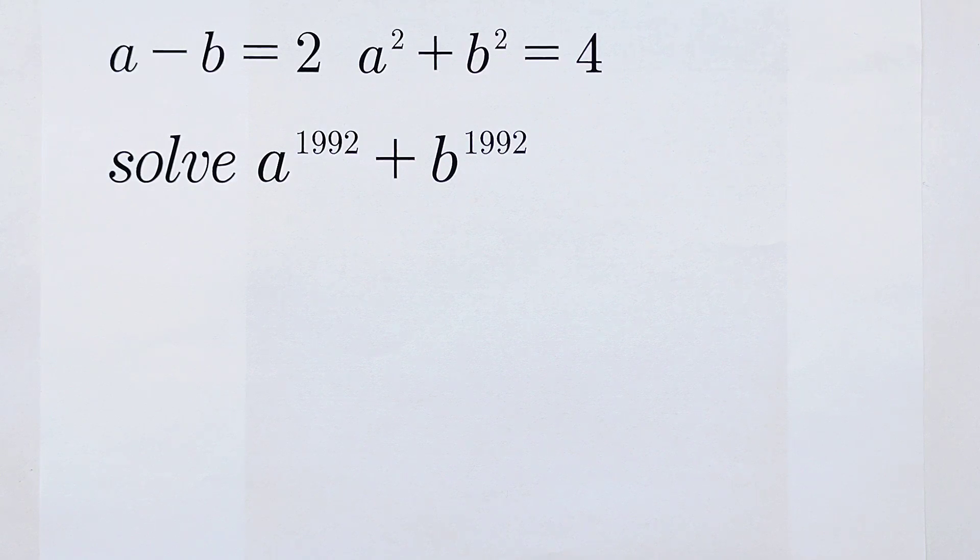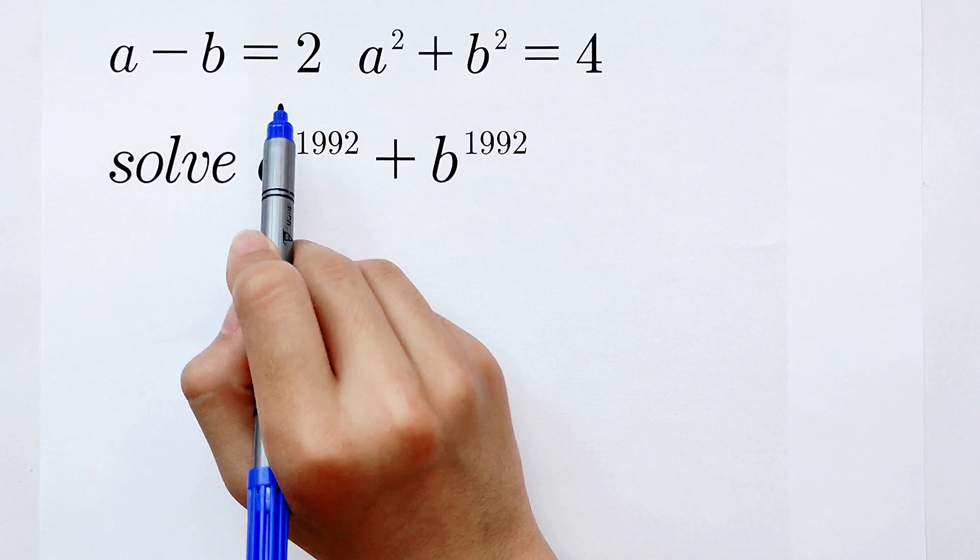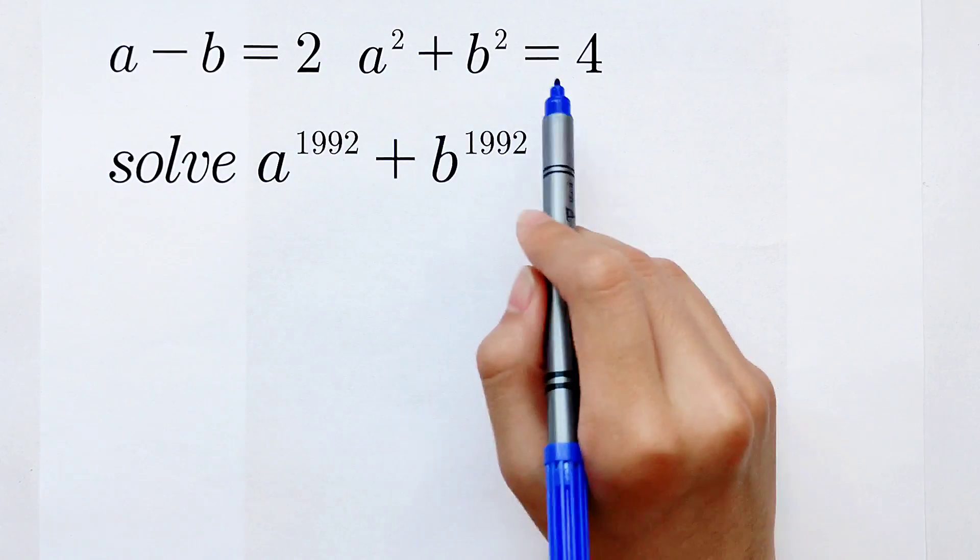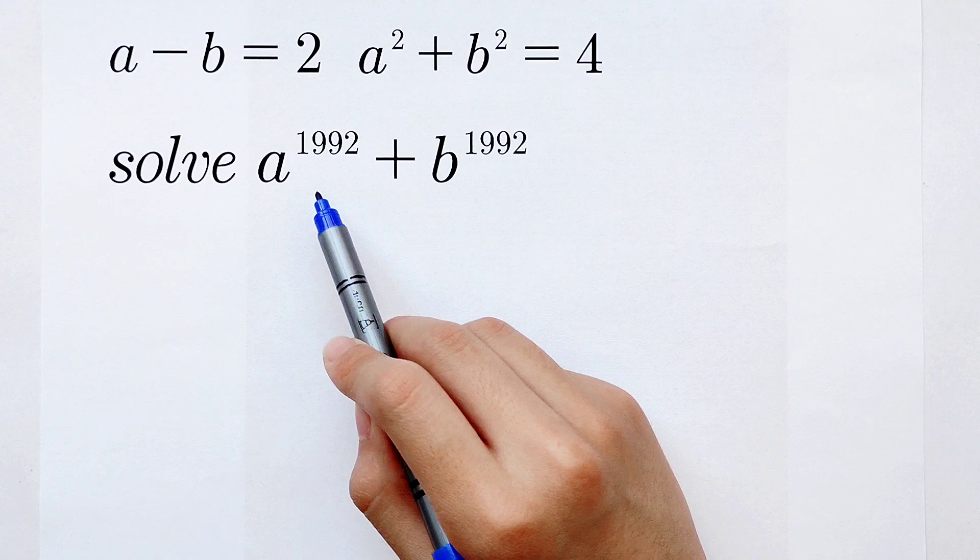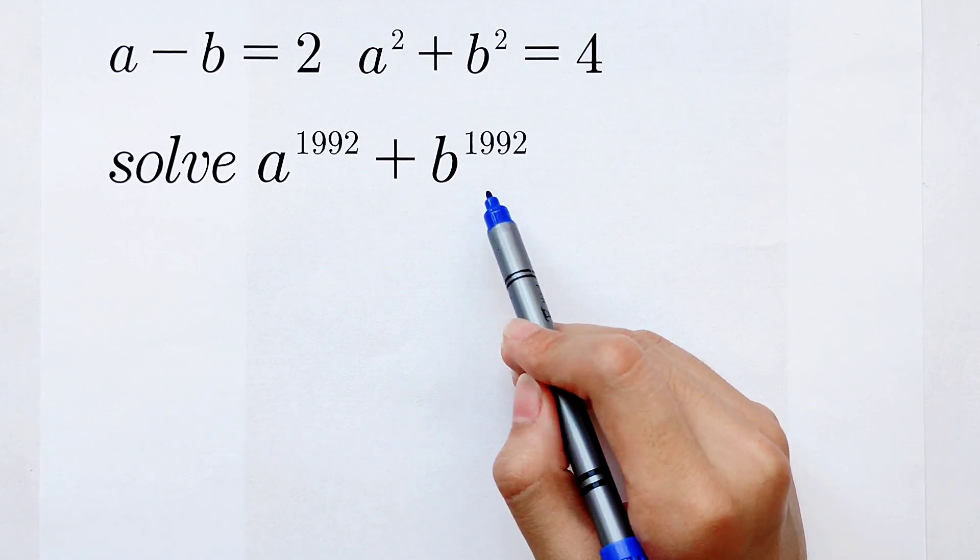Welcome back to my channel. A really nice algebra question. We are given that a minus b is 2 and a squared plus b squared is 4. Solve the value of a to the power of 1992 plus b to the power of 1992.